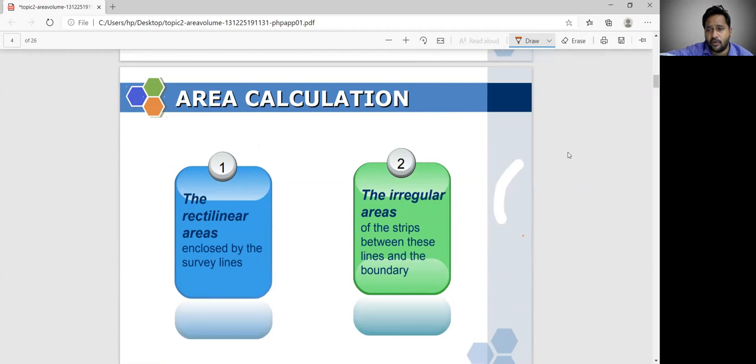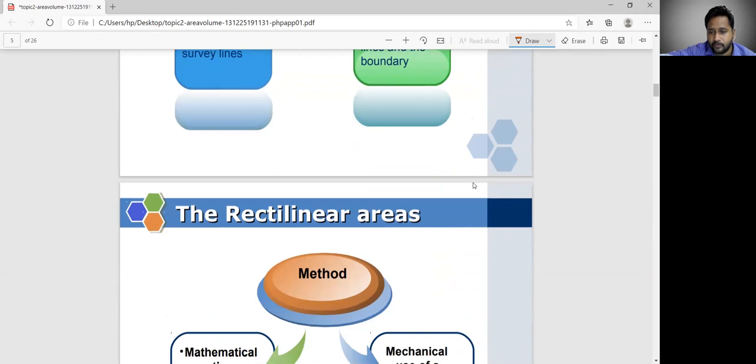That is, if I want to calculate that particular line or particular area like this irregular area, if I want this particular area like this, if I want to calculate that will be irregular area.